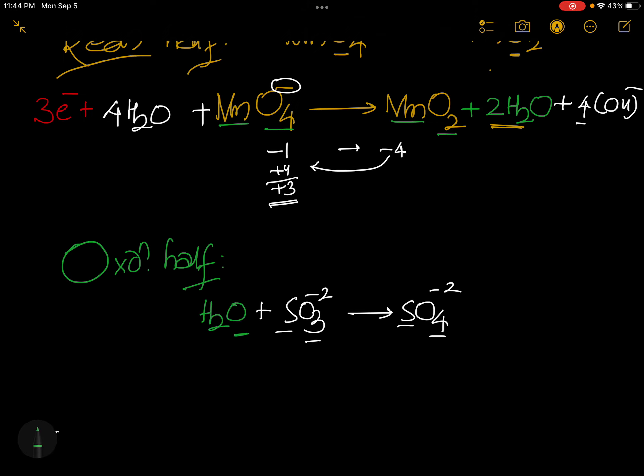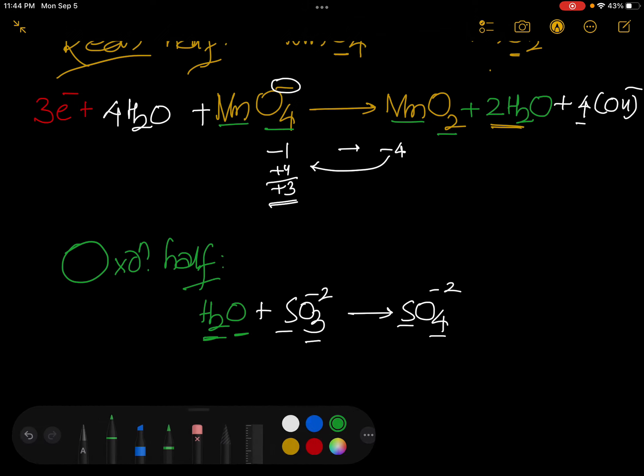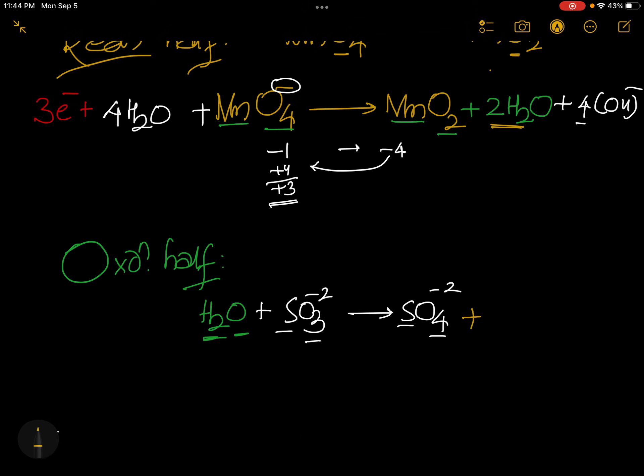Now oxygens balanced. Two hydrogens are here. In order to balance the hydrogens, two are there. So you are adding here 2H2O. This side 2OH minus.